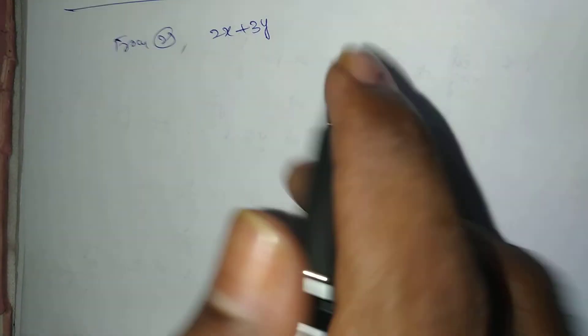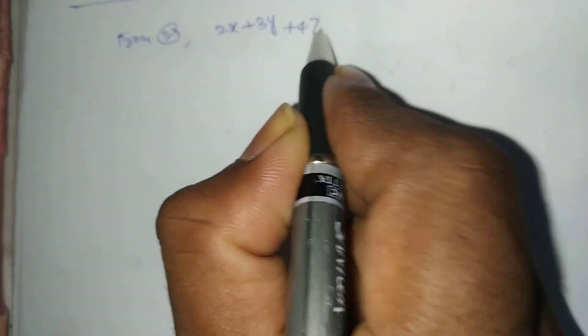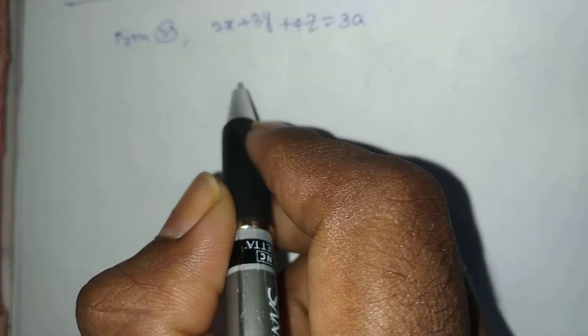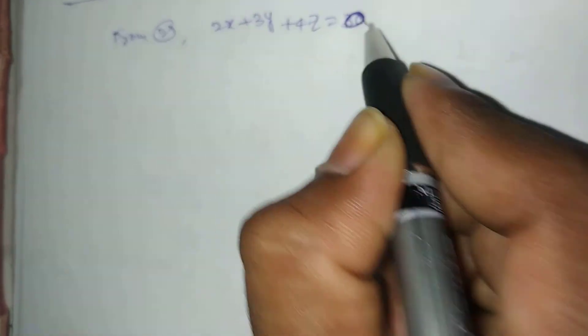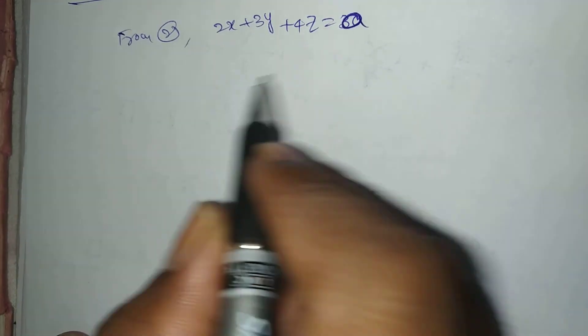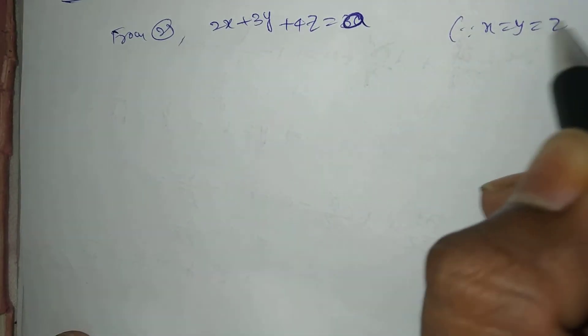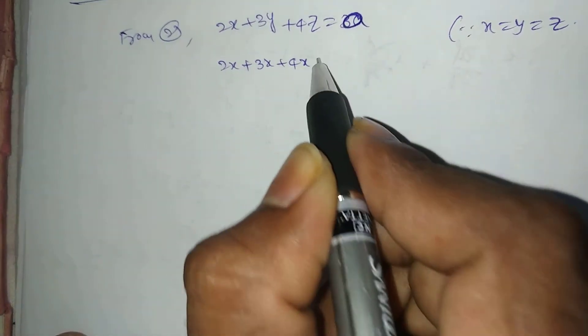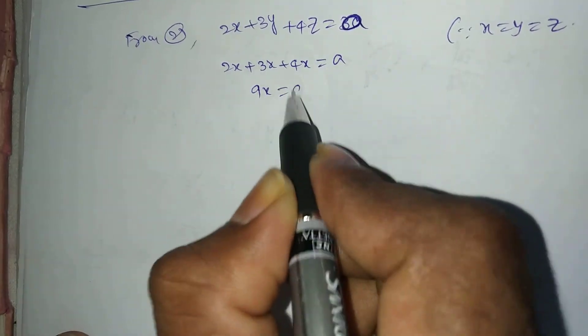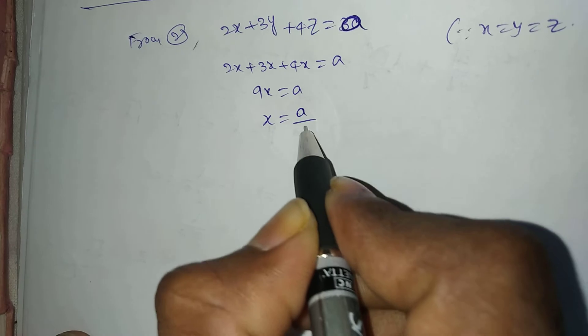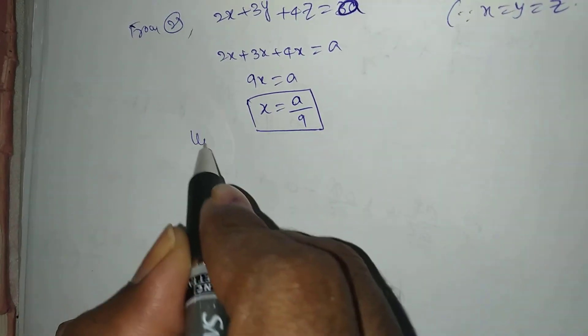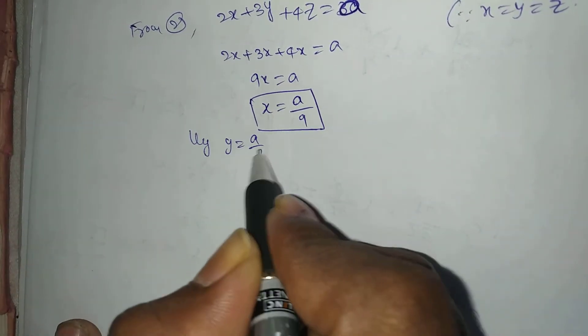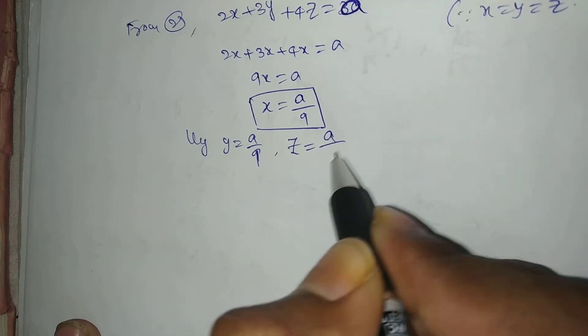From equation 2, the constraint is 2x plus 3y plus 4z equals a. Since x equals y equals z, we substitute z for all variables: 2x plus 3x plus 4x equals a, which gives 9x equals a, therefore x equals a/9. Similarly, y equals a/9 and z equals a/9.